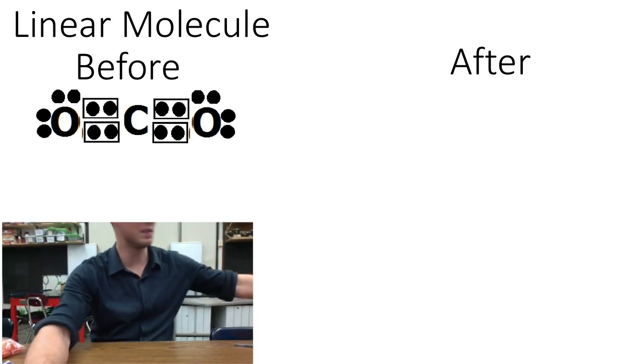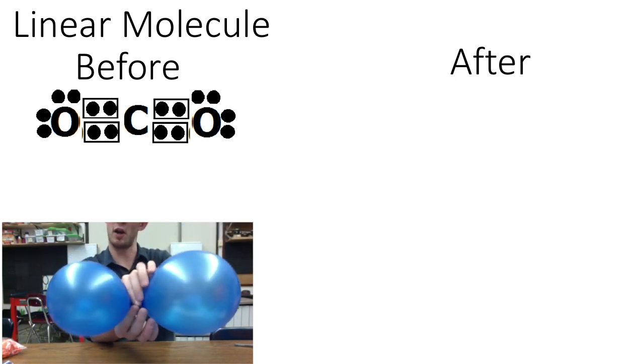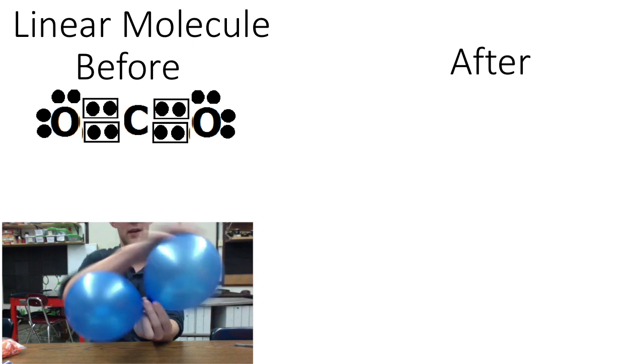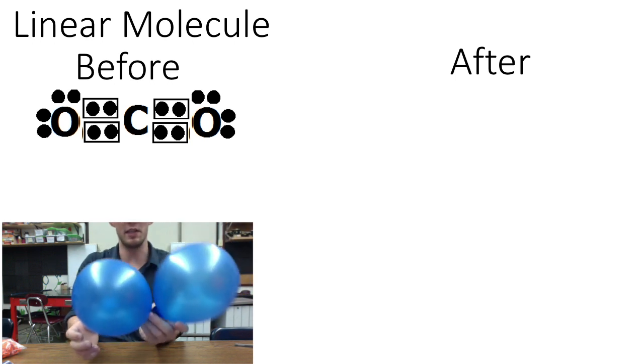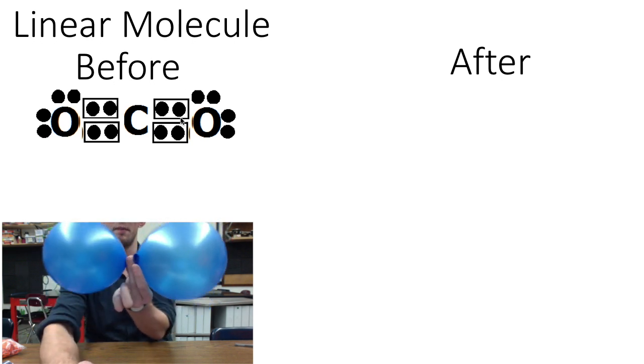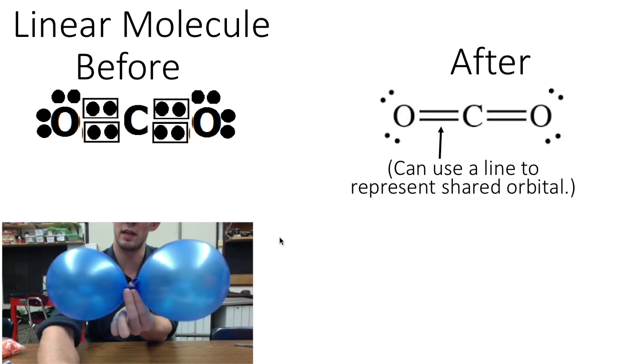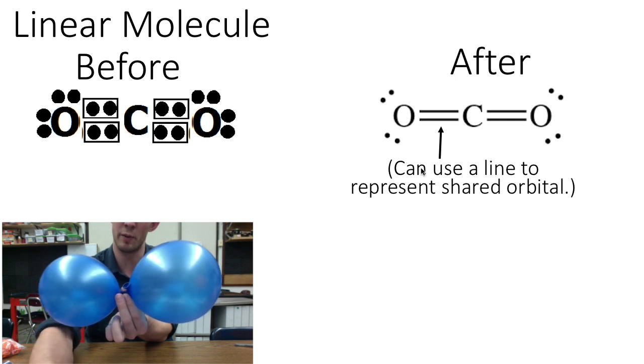The most simple of these shapes is a linear molecule which occurs when a central atom, like carbon, bonds to two separate elements. And when this occurs, the two groups of bonding electrons surrounding carbon repel each other as far away from each other as possible and form a straight 180-degree angle. And you can see we represent that here using lines to represent shared orbitals.